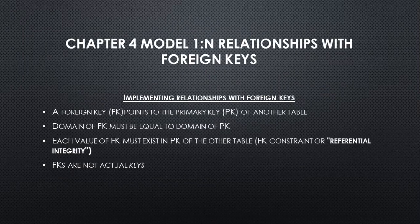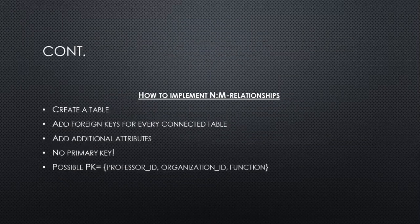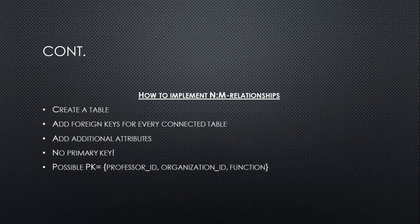Chapter 4: implementing relationships with foreign keys. A foreign key points to the primary key of another table. The domain of the foreign key must be equal to the domain of the primary key, and each value of the foreign key must exist in the primary key of the other table. Foreign keys are not actually keys. To implement a many-to-many relationship: create a table, add foreign keys for every connected table, add additional attributes. A possible primary key is the combination of professor_id, organization_id, and function.